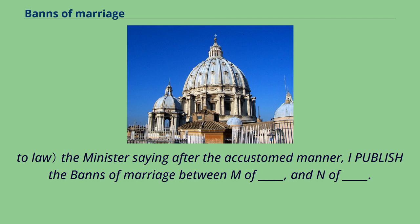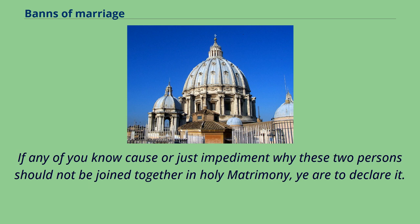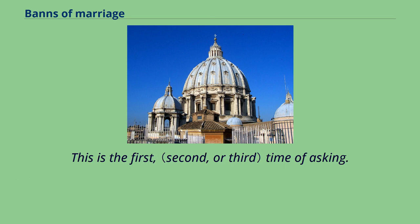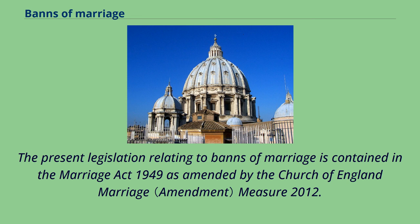The minister saying after the accustomed manner: 'I publish the banns of marriage between M of [blank] and N of [blank]. If any of you know cause or just impediment why these two persons should not be joined together in holy matrimony, ye are to declare it. This is the first time of asking.' The present legislation relating to banns of marriage is contained in the Marriage Act 1949 as amended by the Church of England Marriage Measure 2012.